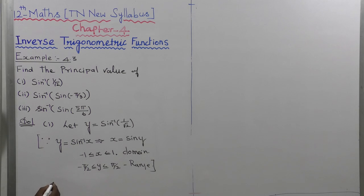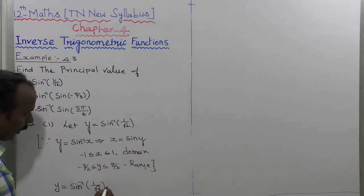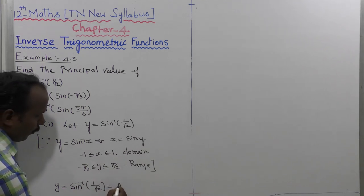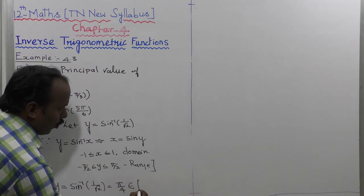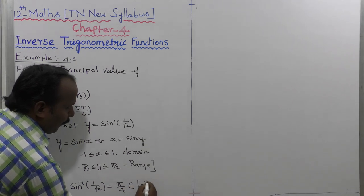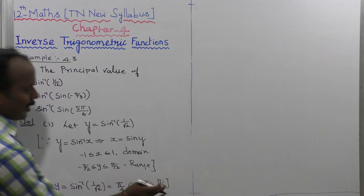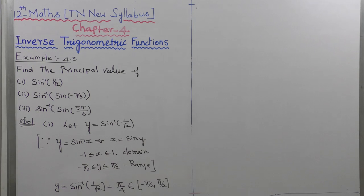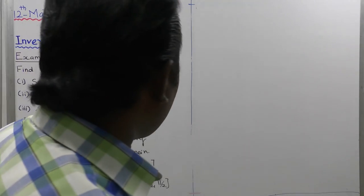For the first subdivision, y is equal to sin inverse of 1 by root 2. Since sin(pi by 4) equals 1 by root 2, we get y equals pi by 4. Pi by 4 belongs to the closed interval minus pi by 2 to plus pi by 2, so the first subdivision is completed.